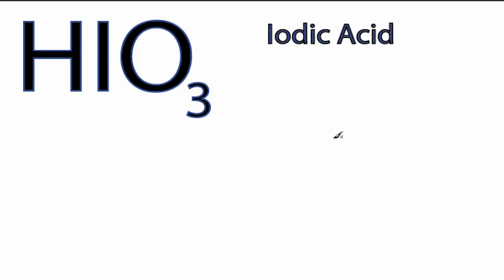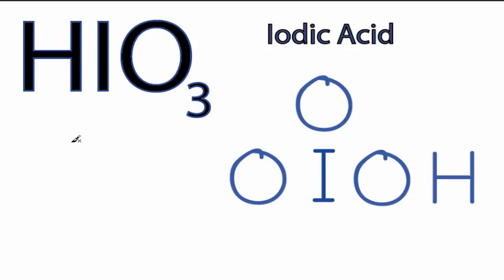So we'll put our iodine here in the center, we'll put an oxygen, and then let's put the hydrogen on the outside like we just said. We have two more oxygens, so we'll put one up here, and then one right here, and that gives us the skeleton structure. For HIO3, we have 26 valence electrons to work with.